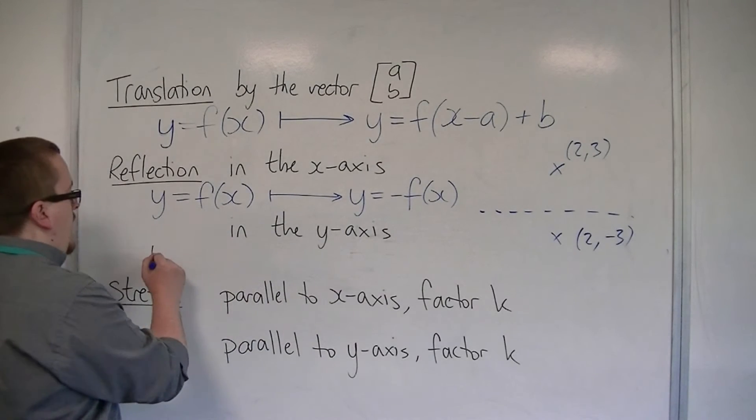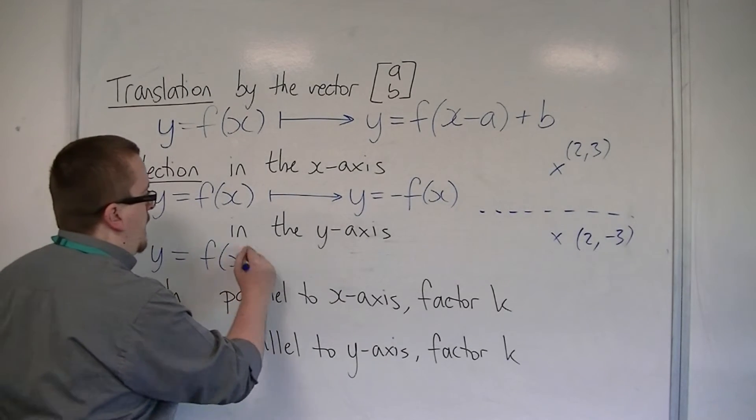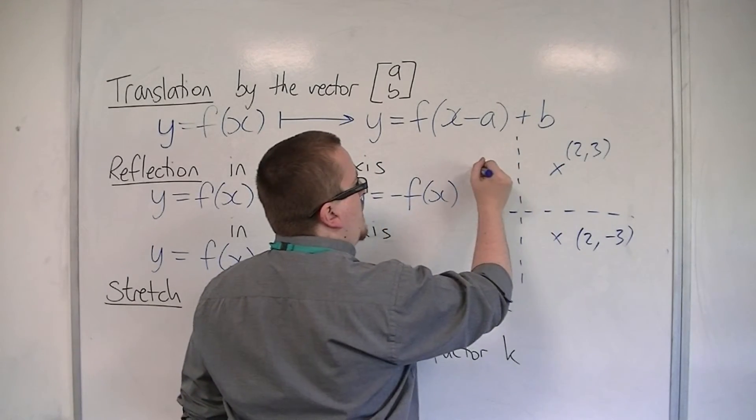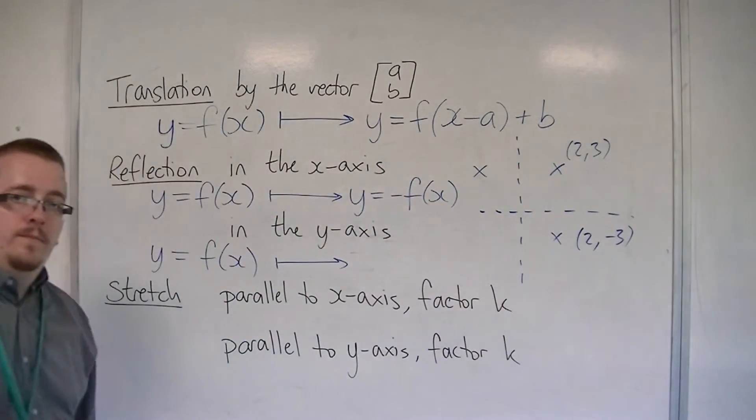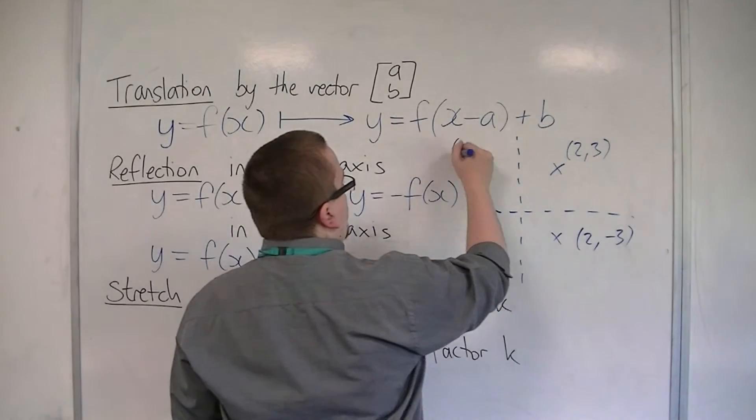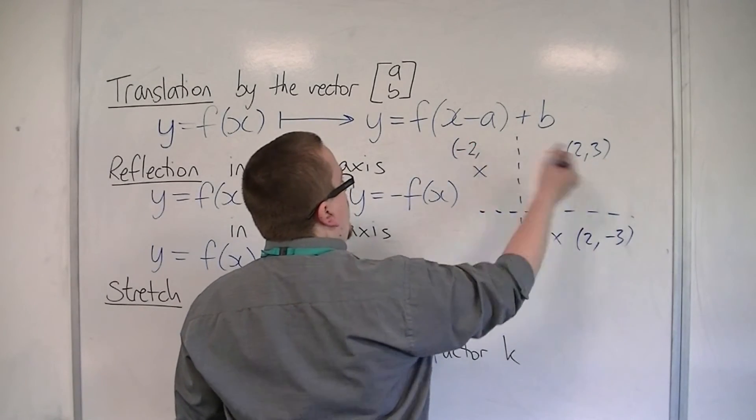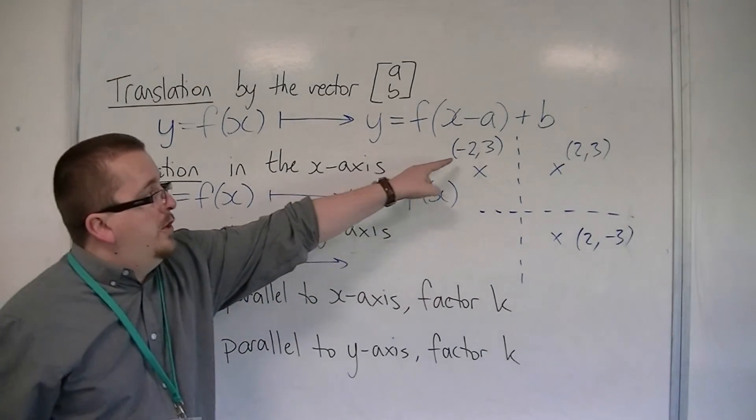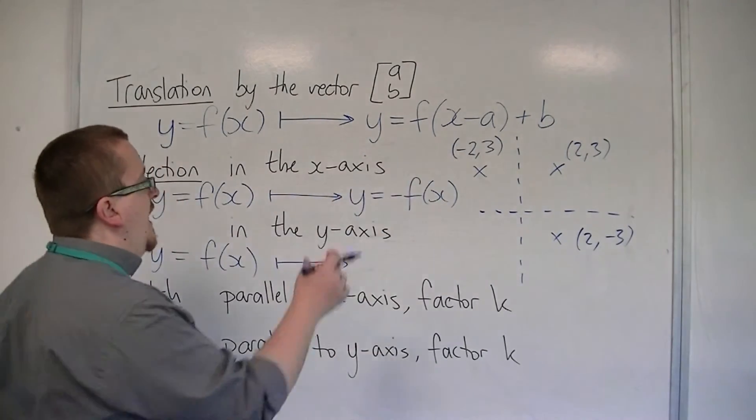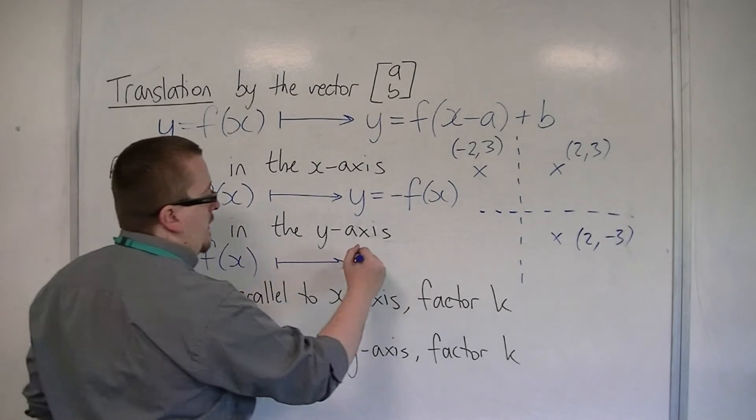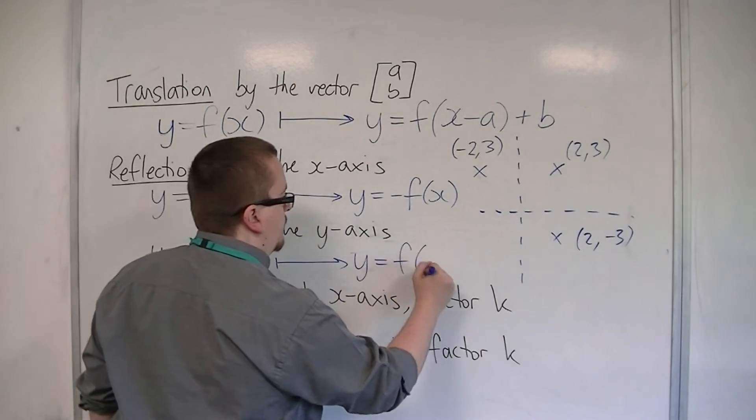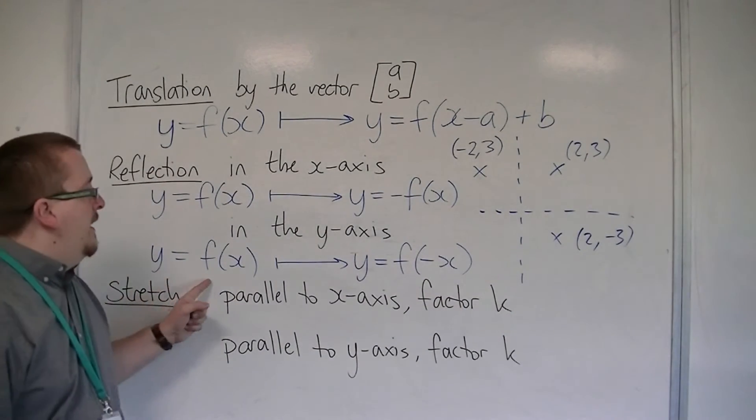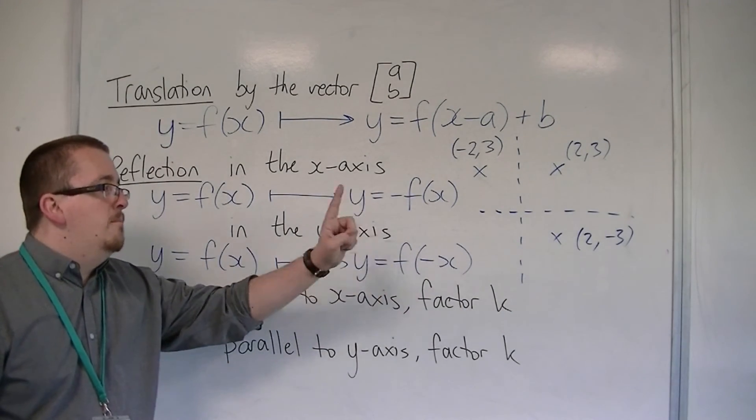If it's in the y-axis, then using that same coordinate, the coordinate would now appear over here. So the x-coordinate would have changed, but the y-coordinate would have stayed the same. And so, because the x-coordinate has changed sign, the x-coordinate inside the bracket has changed sign. Okay? So y equals f of x is mapped to y equals f of minus x.